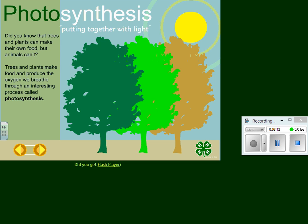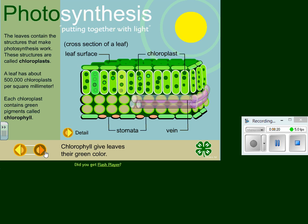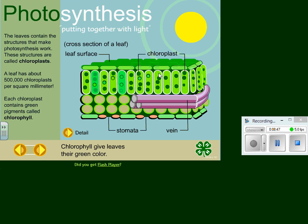Did you know that plants can make their own food but animals can't? Let's look at the details. If you notice here, you have your leaf structure, and within your leaf structure you have chloroplasts. Chloroplast is a what within the cell? Little parts of the cell are called organelles. Notice here you have your stomata — what is the stomata for?